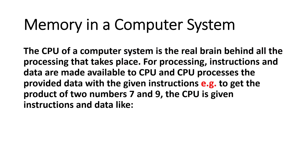Memory in a computer system. The CPU of a computer system is the real brain behind all the processing that takes place. Computer system mein jo bhi processing ho rahi hai, voh CPU ki vajah se possible hai — CPU hi saari processing ke liye responsible hai, isliye hum ise brain of a computer kehte hain. For processing, instructions and data are made available to CPU, and CPU processes the provided data with the given instructions.